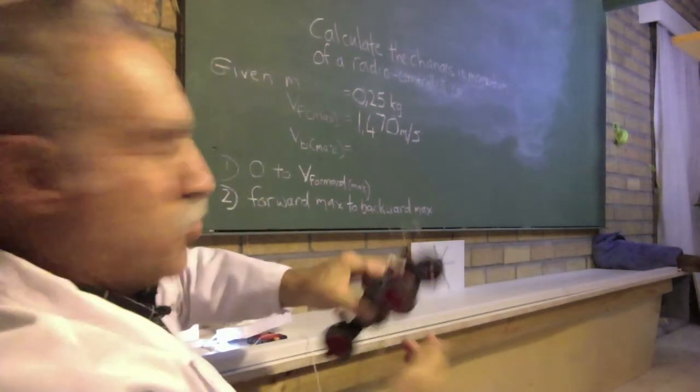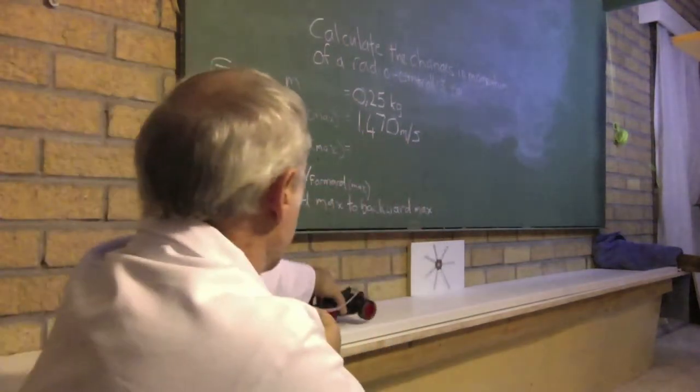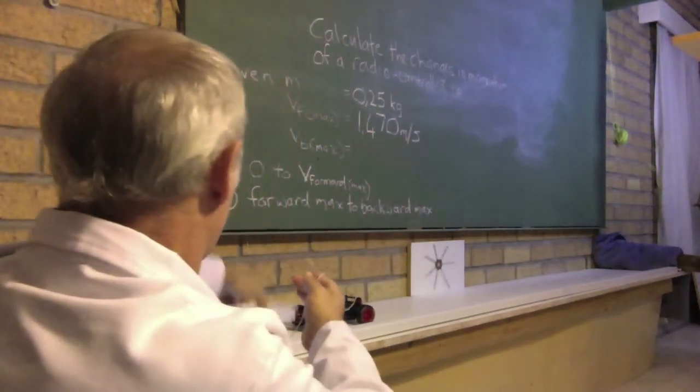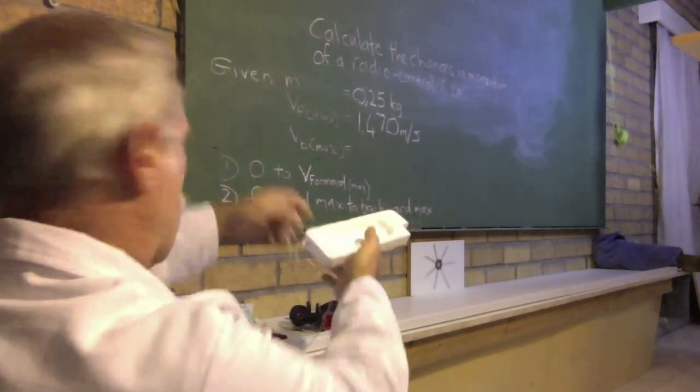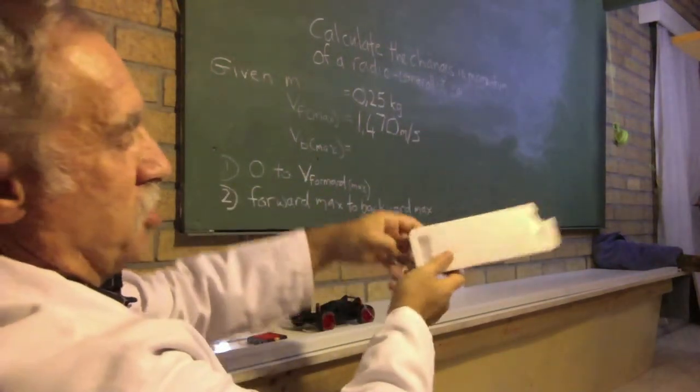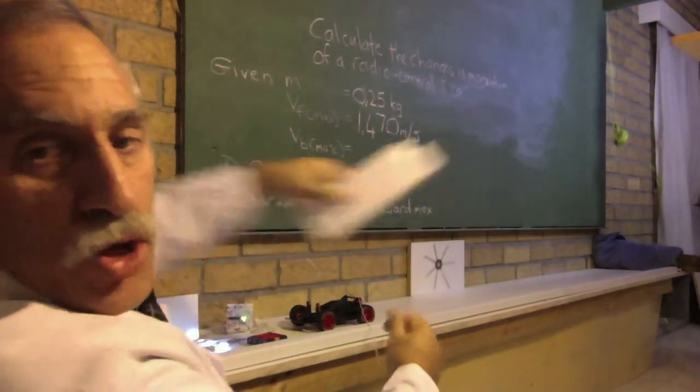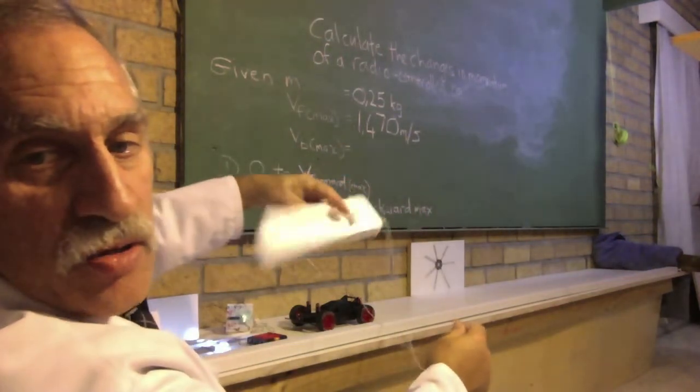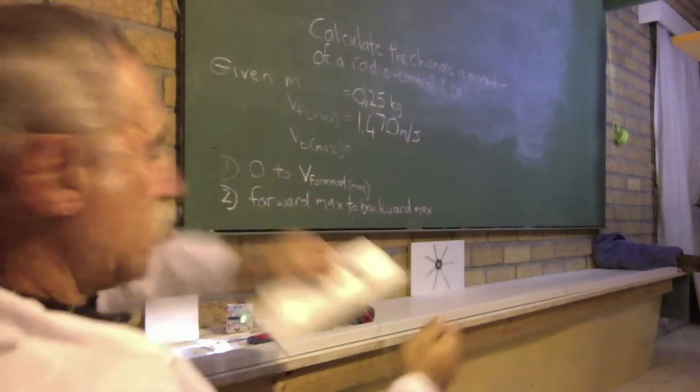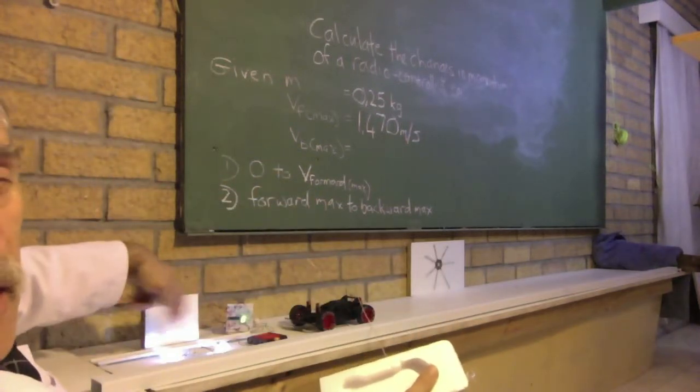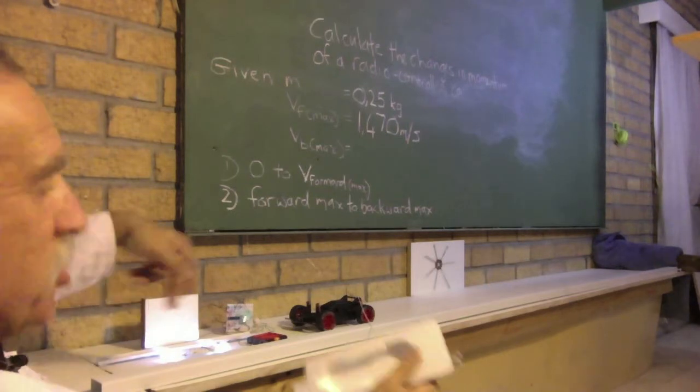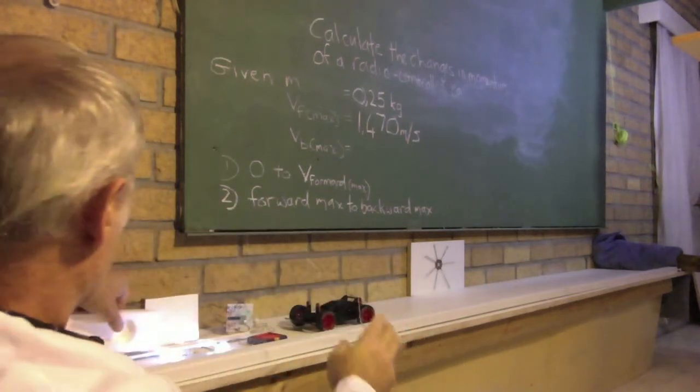And now we're going to work out the maximum velocity of our car going backwards. So here is the little piece of polystyrene, which the car drags. And as it drags, it cuts two photo light beams. And that is what measures the speed of the car when it's going at its maximum.